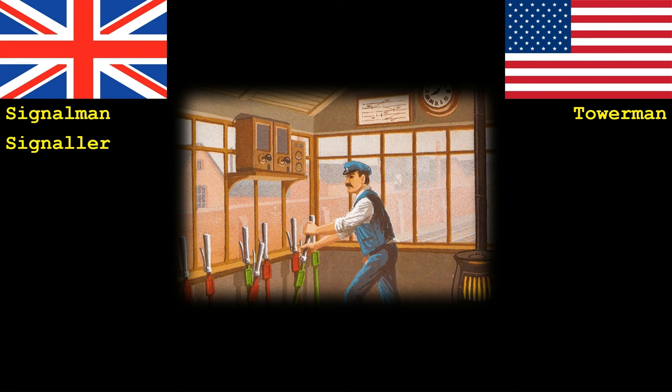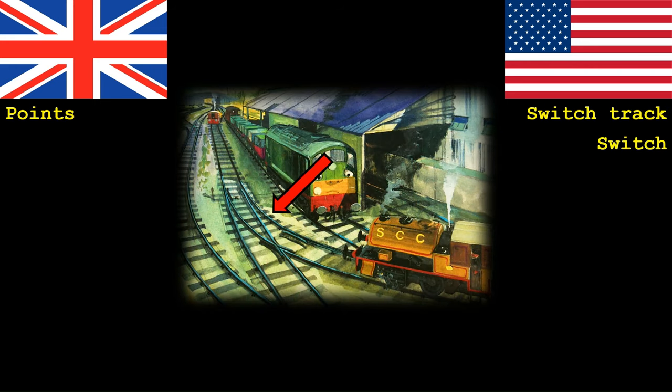It's not just crossings and signals which can be controlled from a signal box or signal tower. The other responsibility of a signal man or tower man is making sure the trains are running on the correct track, and sometimes switching them over. To do this you would run them over what in the UK is known as a set of points. In America this is called a switch track, though it's usually just shortened to switch.